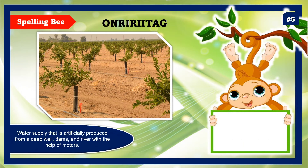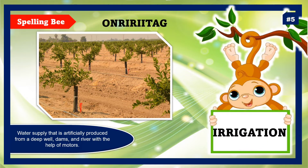Item number 5. The jumbled letters and picture are there. Your clue: water supply that is artificially produced from a deep well, dams, and rivers with the help of motors. The correct answer is irrigation. This is an example of drip irrigation — this orange thing here waters the plants.